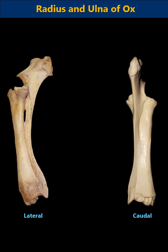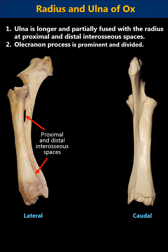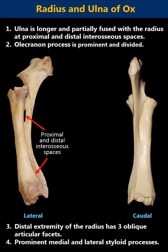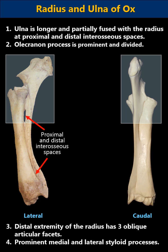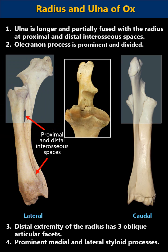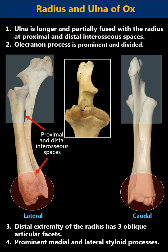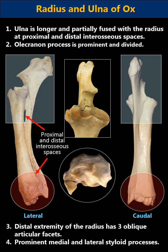Meanwhile, in ruminants, the ulna is longer and partially fused with the radius at proximal and distal interosseous spaces. The olecranon process is prominent and divided. The distal extremity of the radius has three oblique articular facets and there are prominent medial and lateral styloid processes.